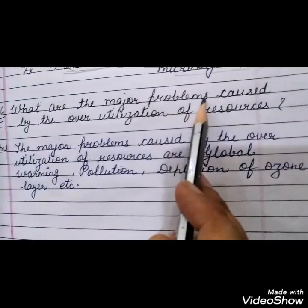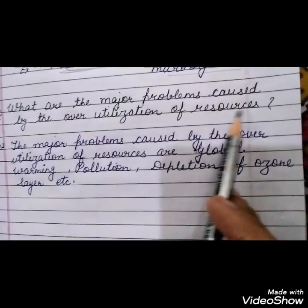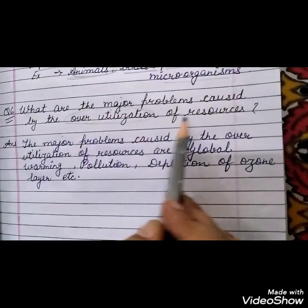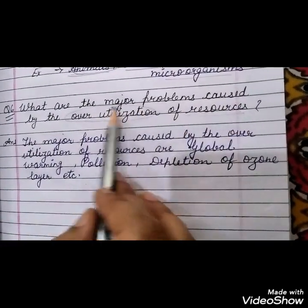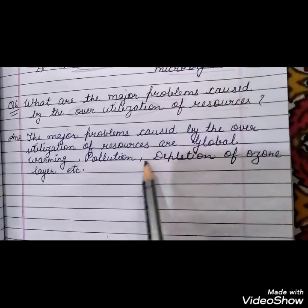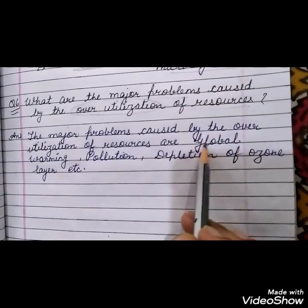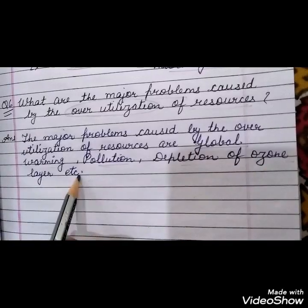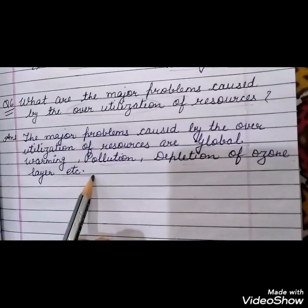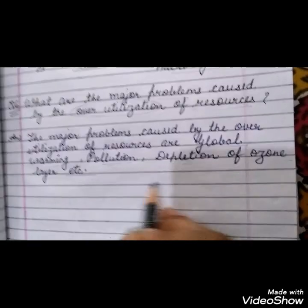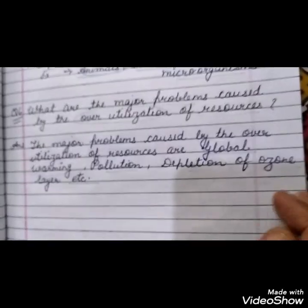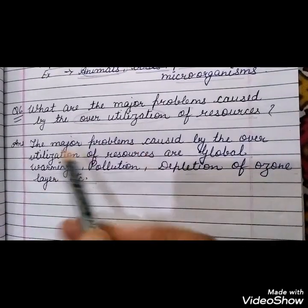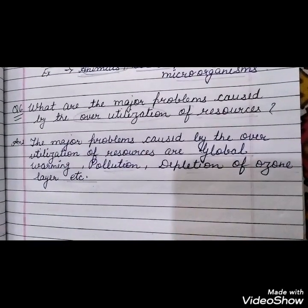Fifth: what are the major problems caused by our utilization of resources? The problems include global warming, pollution, and depletion of the ozone layer, etc. Thank you students for watching this video and I hope you understand this and do it in your fair notebook.